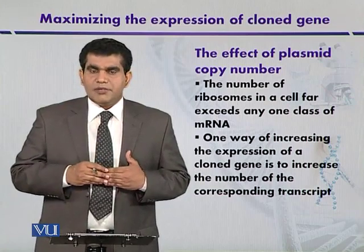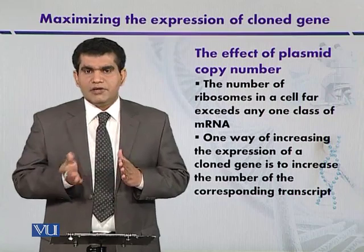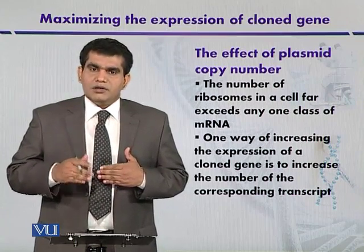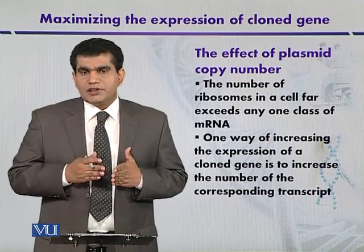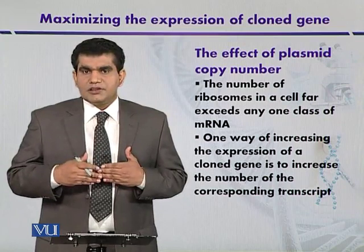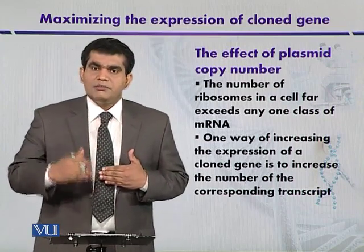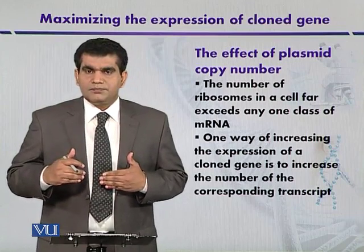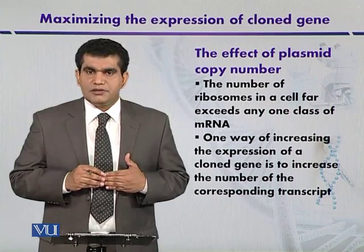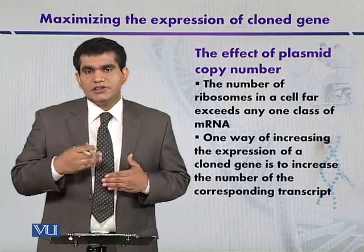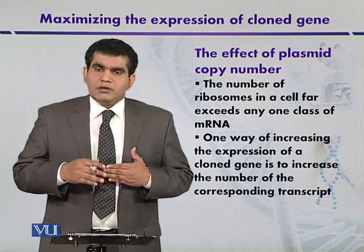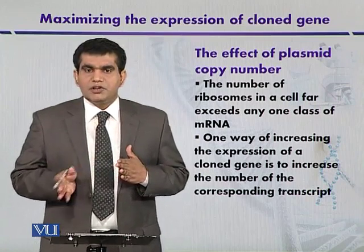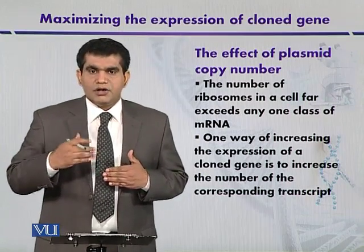Some scientists have managed plasmid copy number by using two regions of replication that are active at different temperatures. For example, one region of replication is activated at 30 degrees Celsius and, by interacting with the partition region, maintains a low copy number when growing at that low temperature. The other region of replication is activated at 36 degrees Celsius, giving a high copy number. By managing temperature using two regions of replication, some workers have thus managed the copy number of plasmids.